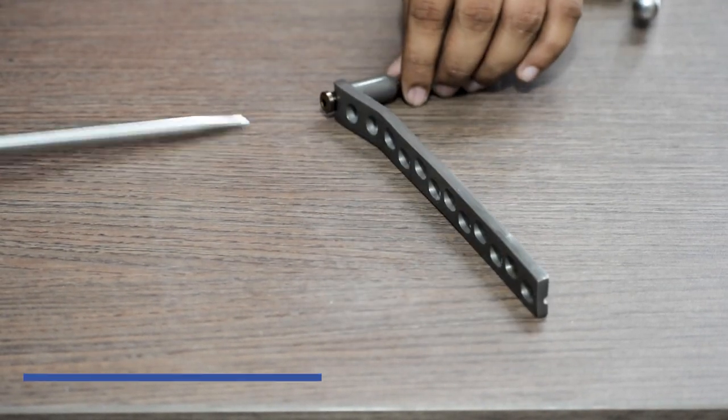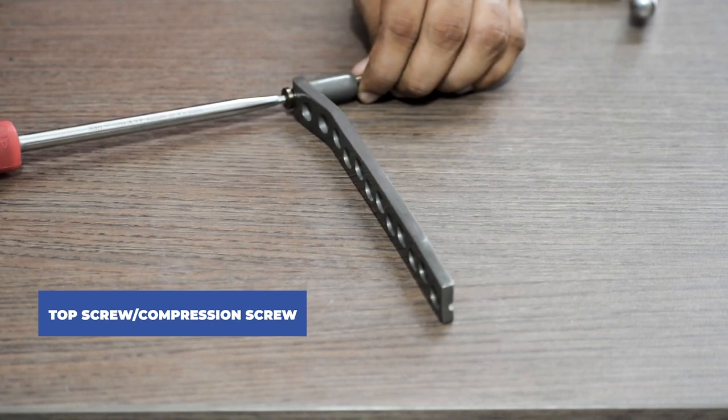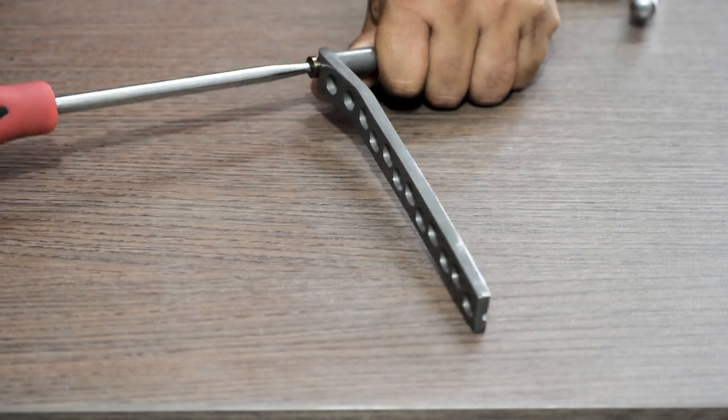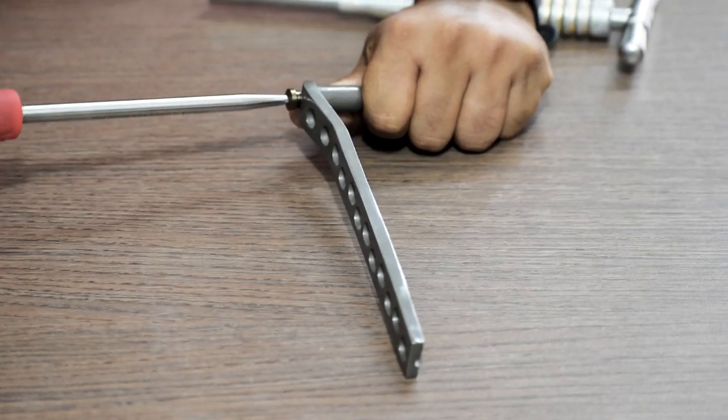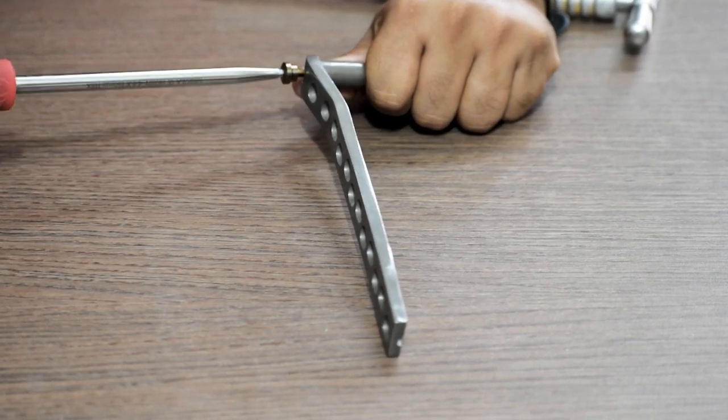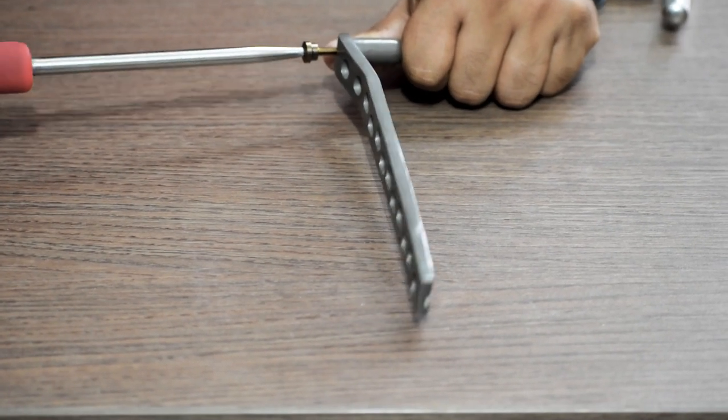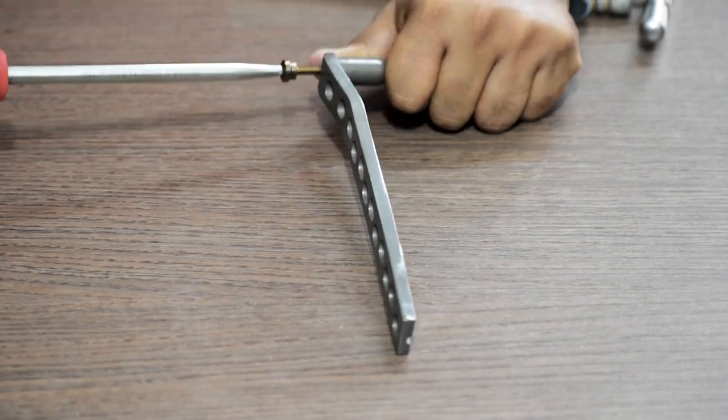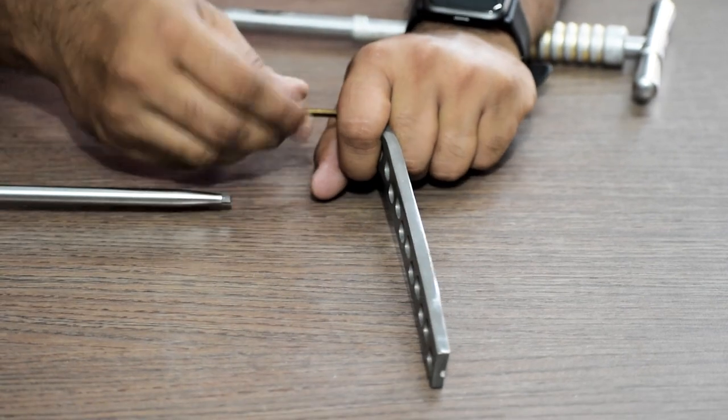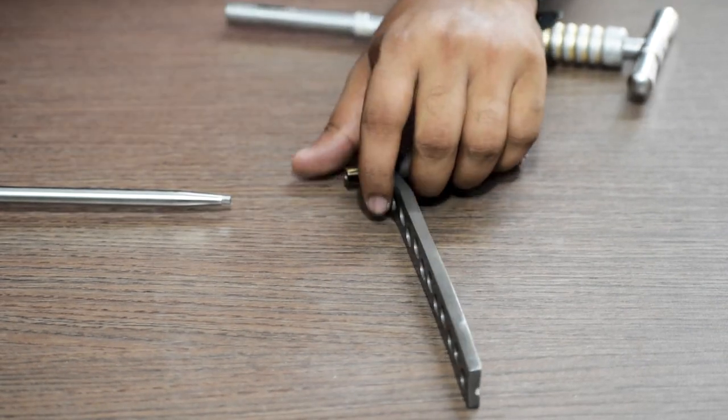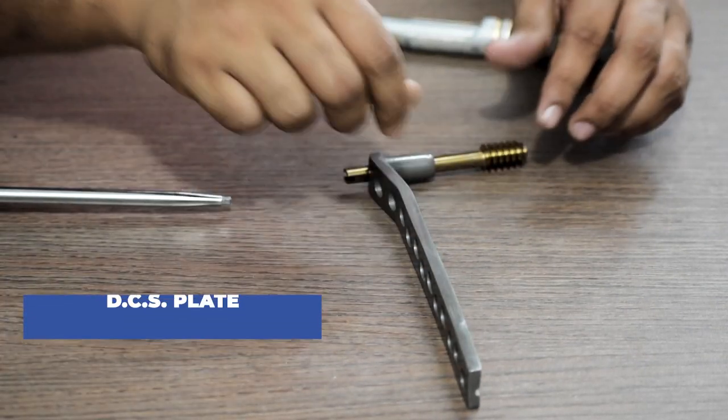Then we remove the top screw or the compression screw. Then we remove the DCS plate.